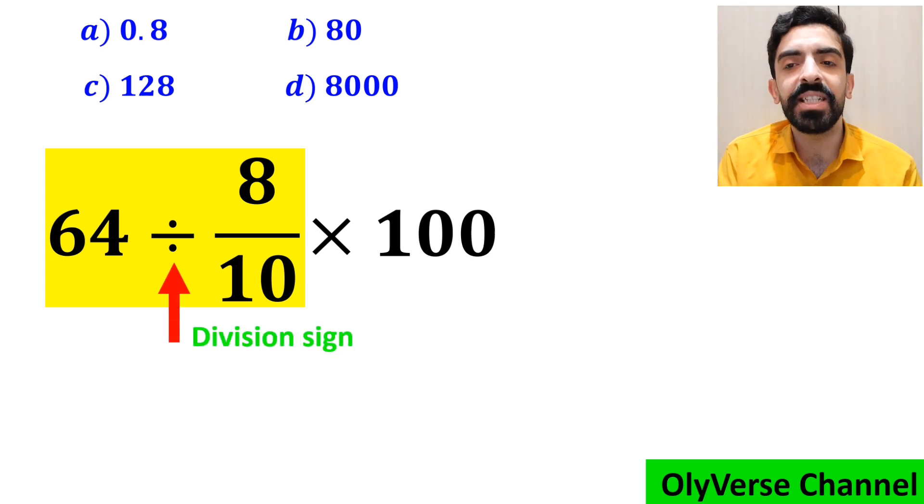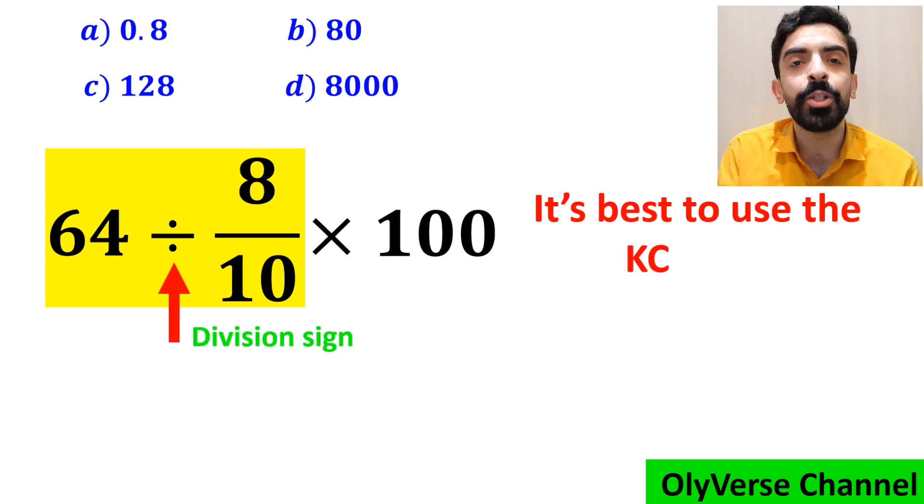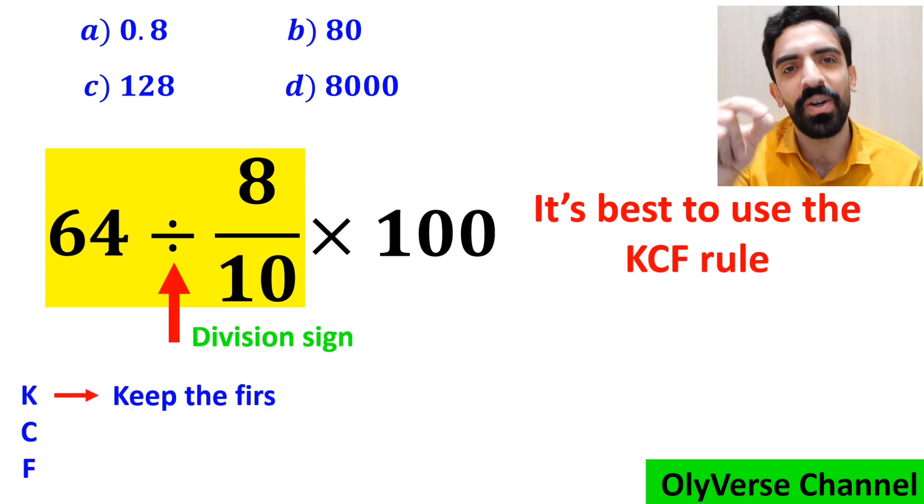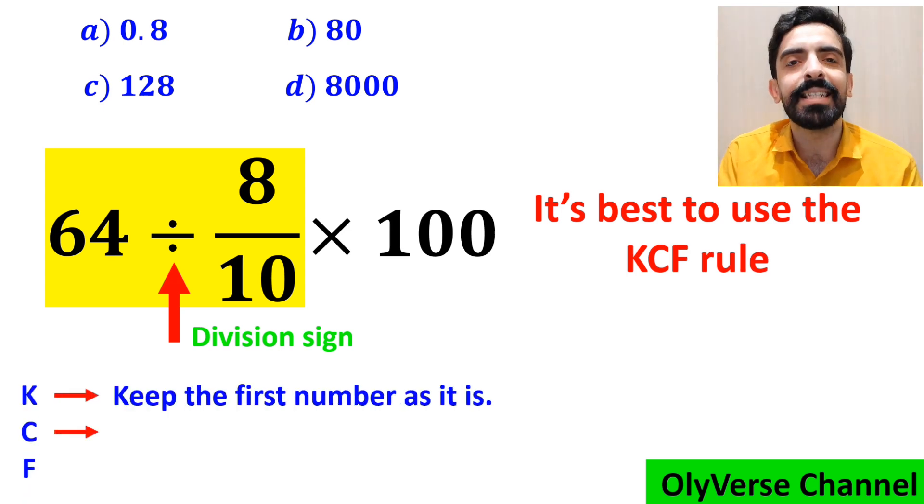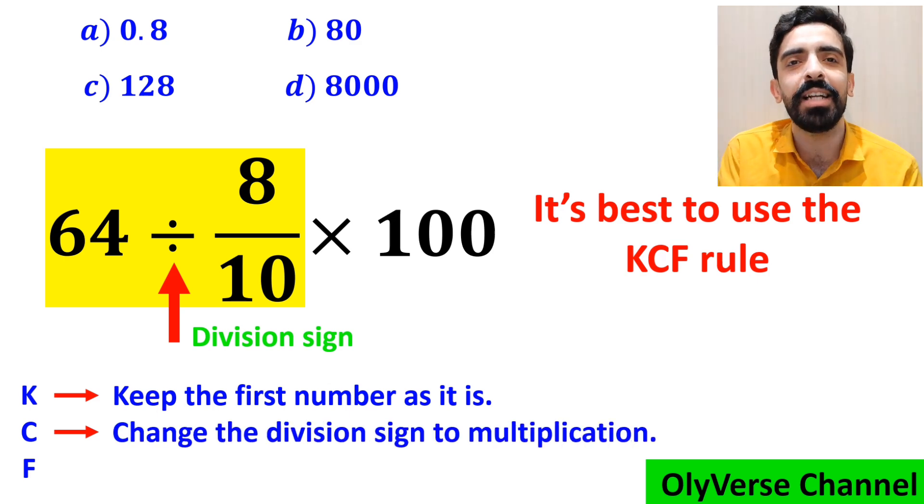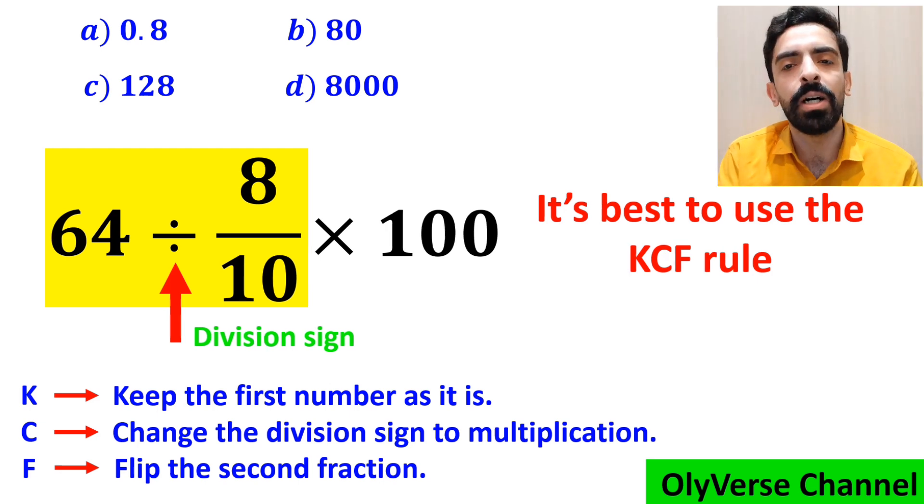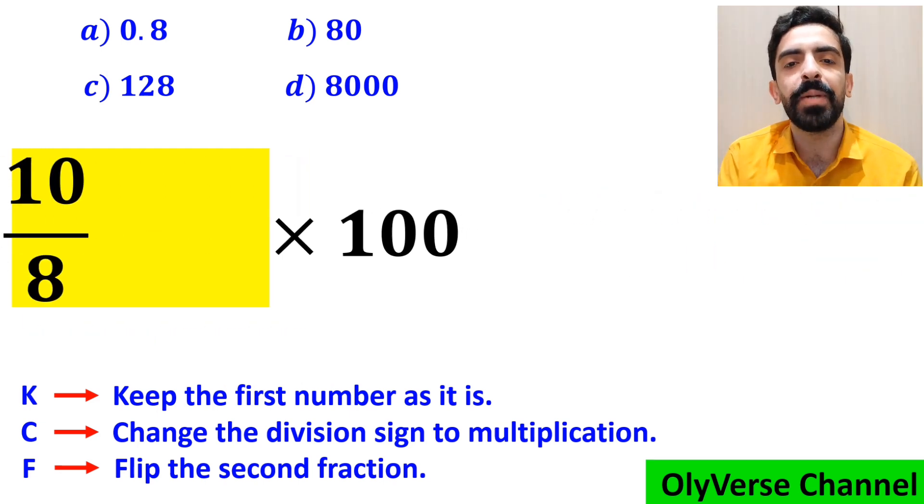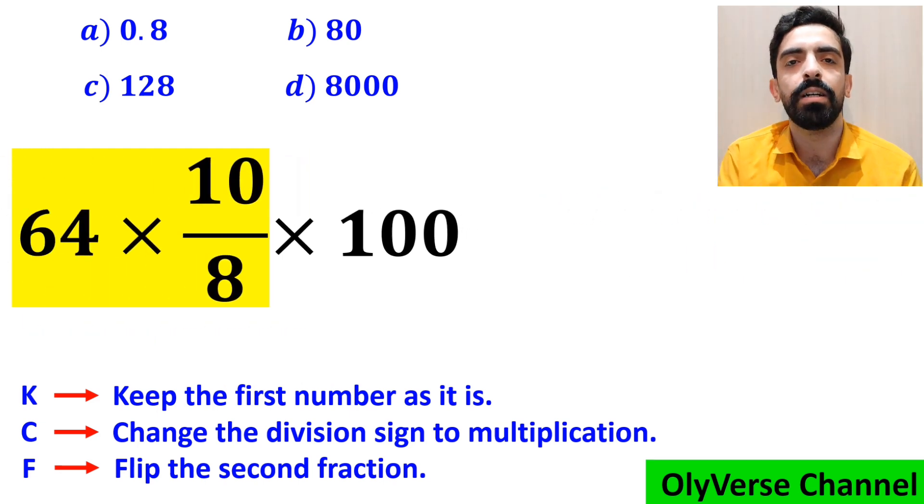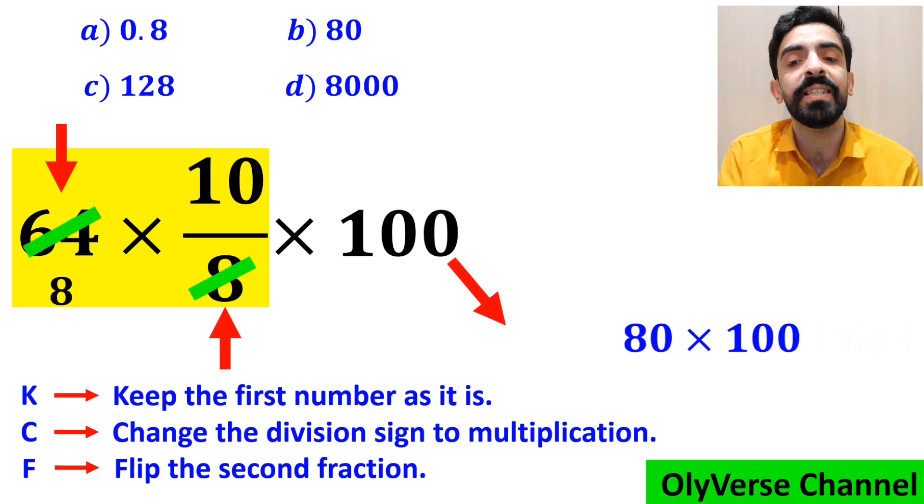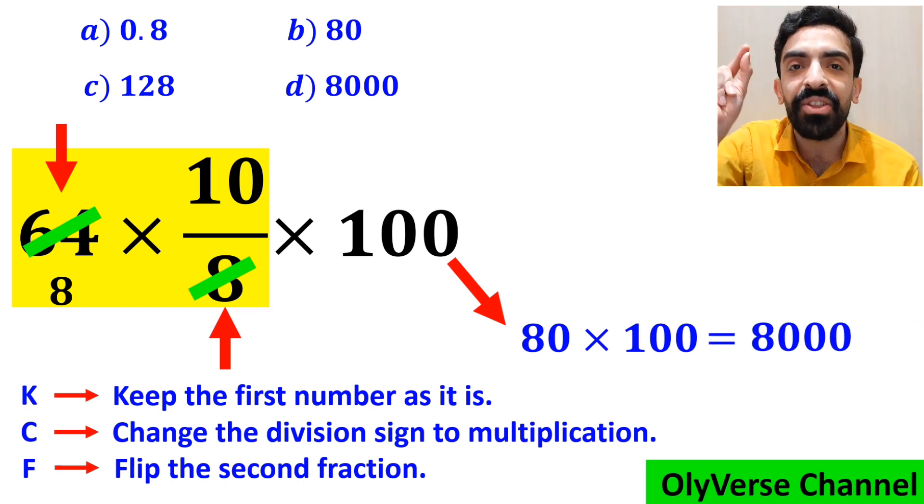Whenever we see a division sign between two terms, it's best to use the KCF rule. In this rule, K stands for keep the first number as it is, C stands for change the division sign to multiplication, and F stands for flip the second fraction. So we remove the highlighted part and replace it with 64 multiplied by 10 over 8. As you can see in the image, the number 64 simplifies with the 8 in the denominator, and this expression simplifies to 80 multiplied by 100, which finally gives us the answer 8000.